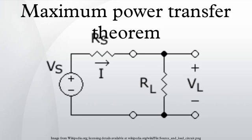In electrical engineering, the maximum power transfer theorem states that to obtain maximum external power from a source with a finite internal resistance, the resistance of the load must equal the resistance of the source as viewed from its output terminals.